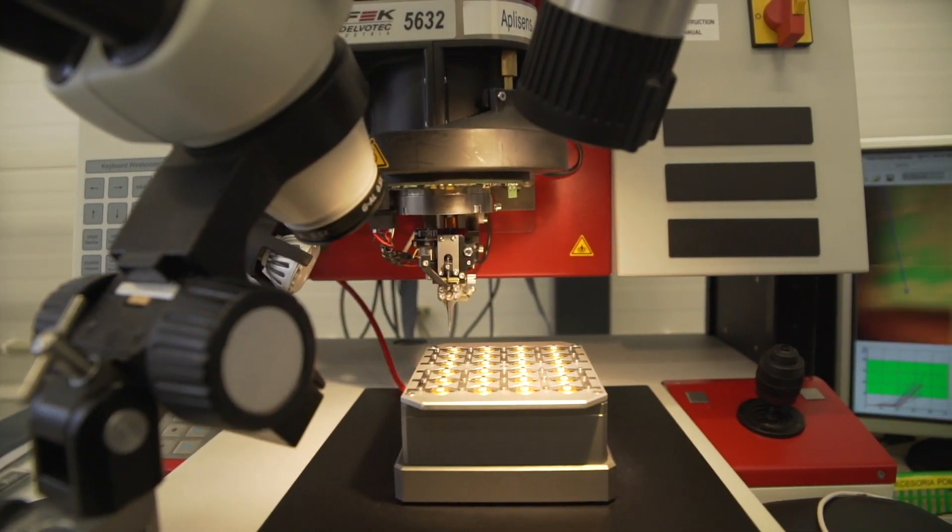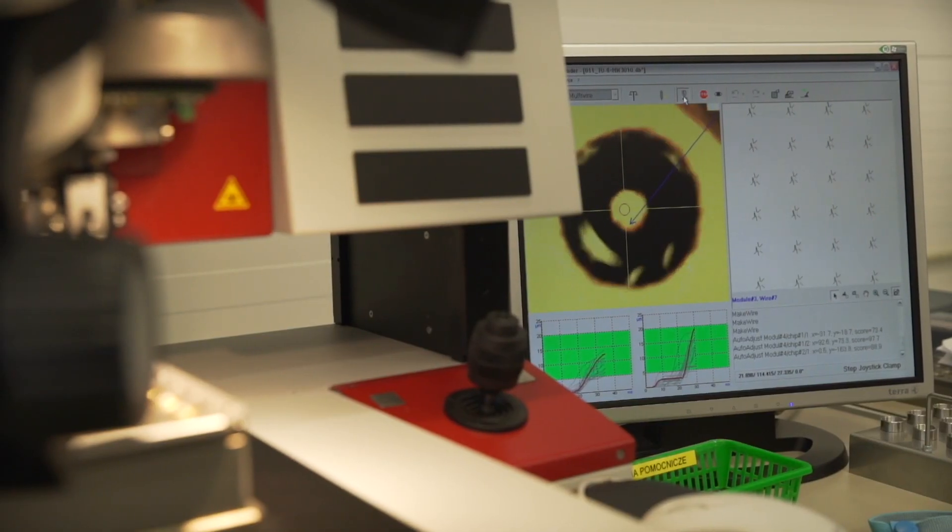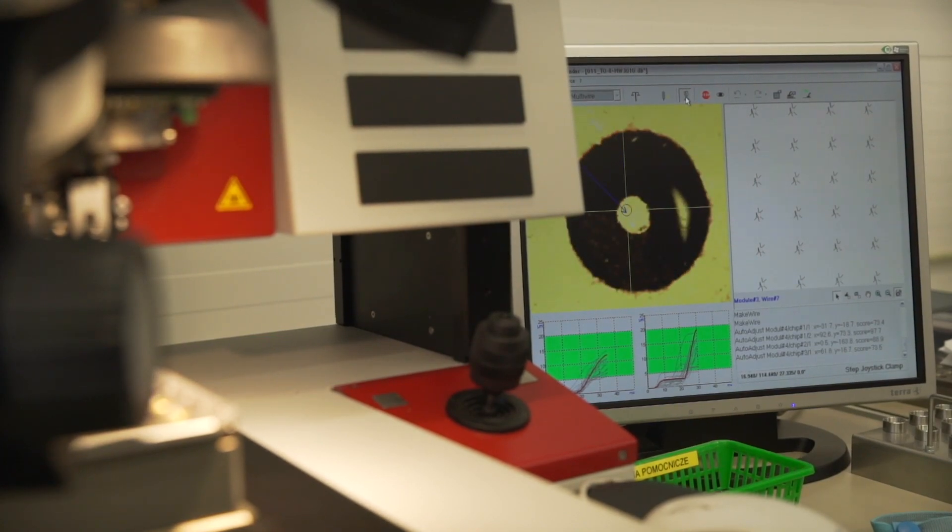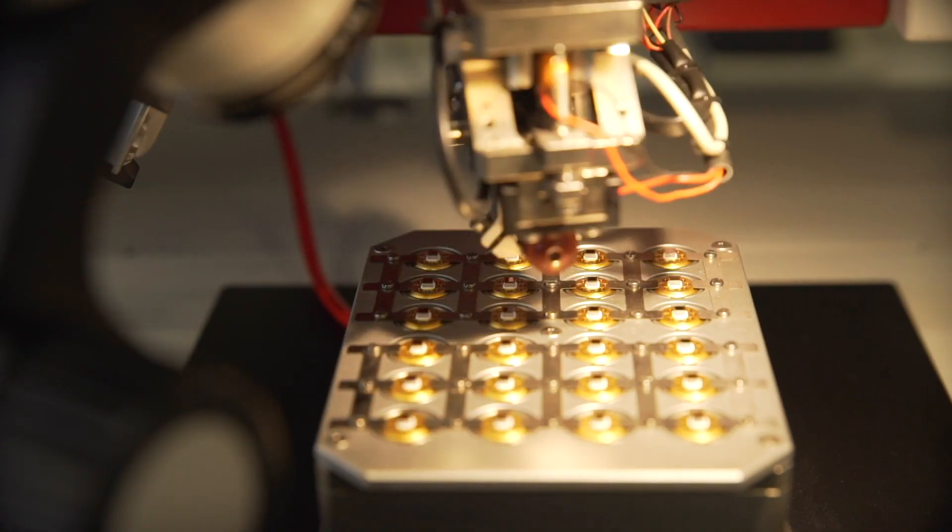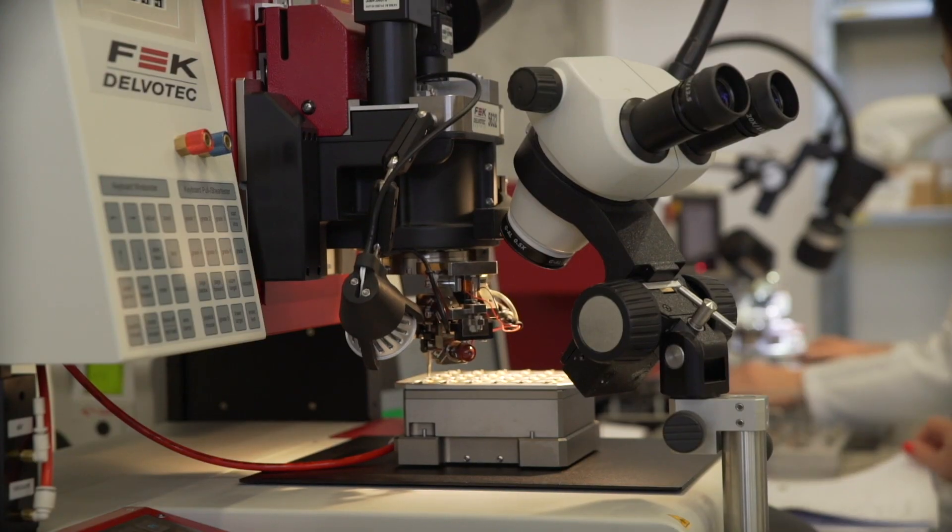Bonding wires, which draw the electrical signal from the pressure sensor die to external leads, have only 20 microns in diameter. That is why their assembly is made automatically.